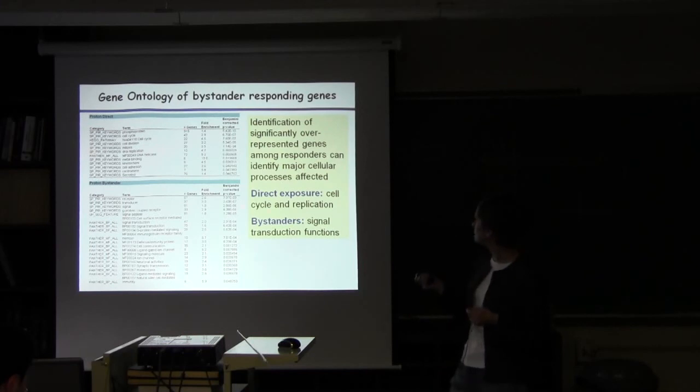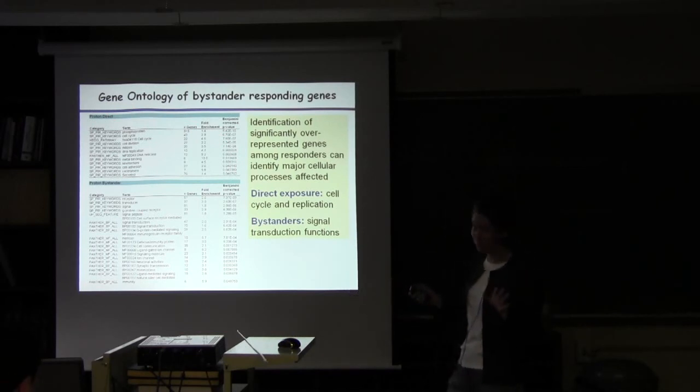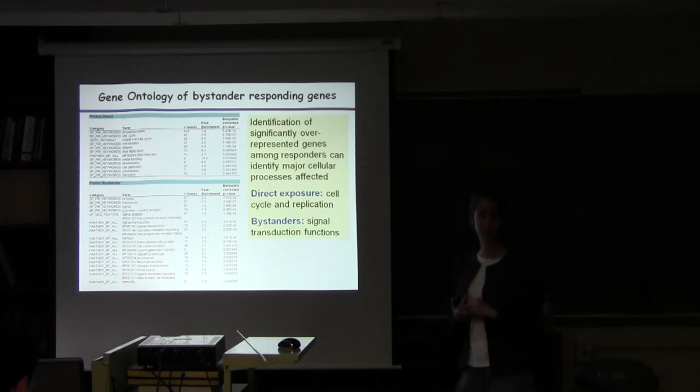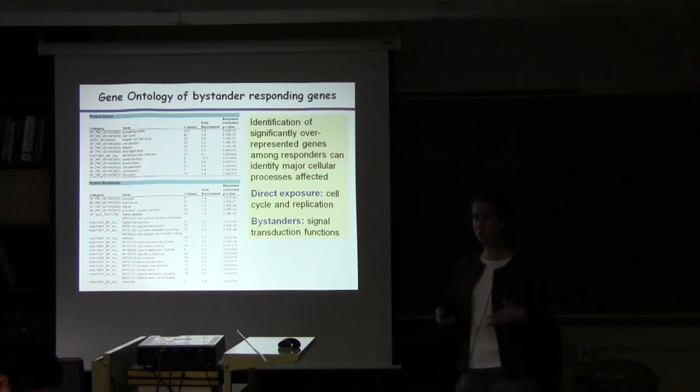And so this is the kind of analysis that we do here and you get a p-value which suggests over expression or under expression of specific categories. So that's what these lists are. And cutting to the chase, in the direct exposure, this is our bystander gene list and we're comparing it with direct exposure which was done in a separate experiment, just irradiating the whole tissue with protons. So when we expose the whole tissue we see predominantly functions that are involved with cell cycle and replication, which sort of makes sense. You irradiate things, that's certainly one of the chief things that you expect to happen.